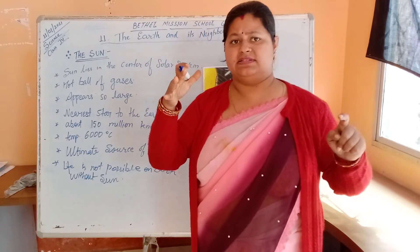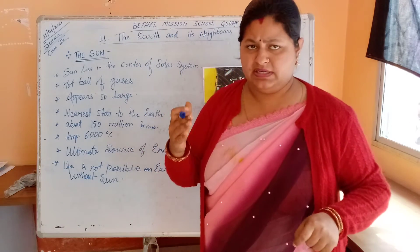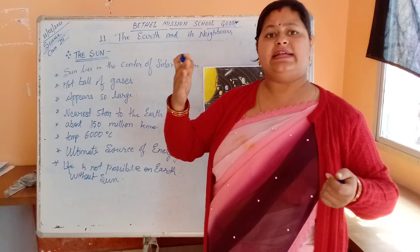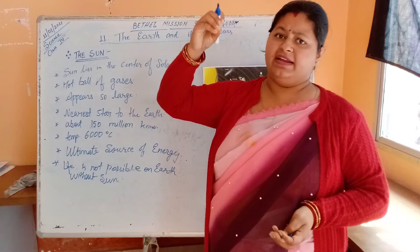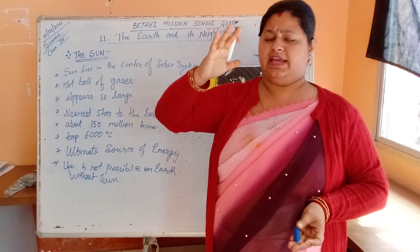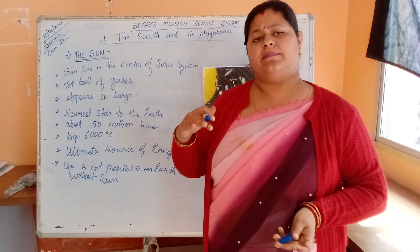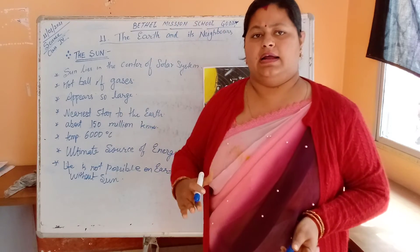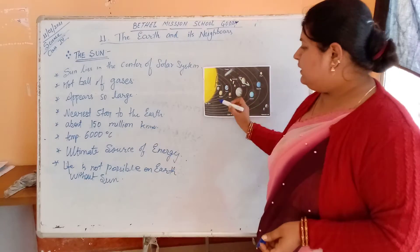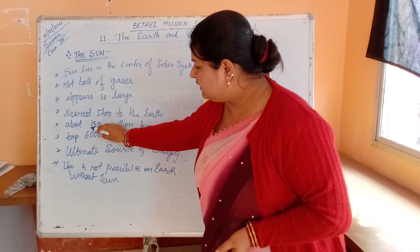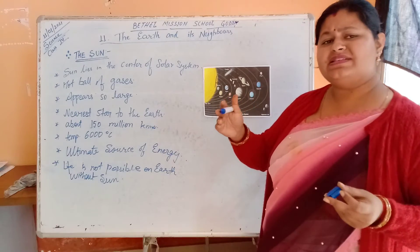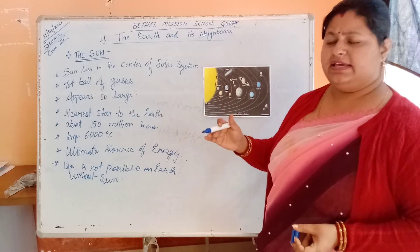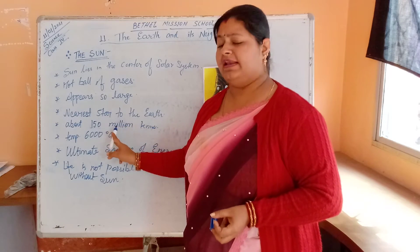We can identify the shape of the sun and we can also feel the heat and light it provides. We cannot feel the light provided by other stars because they are very, very far from the earth. The approximate distance between the earth and the sun is 150 million kilometers.